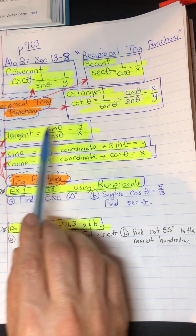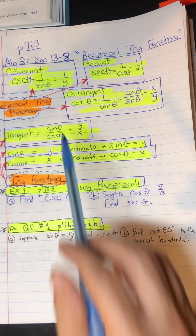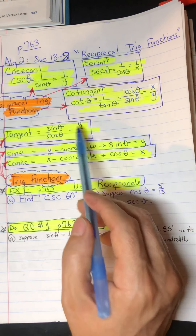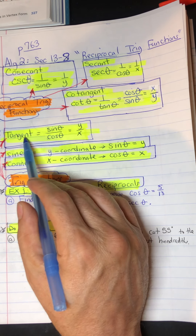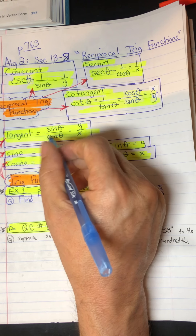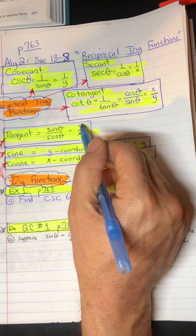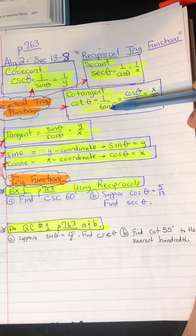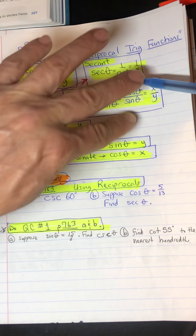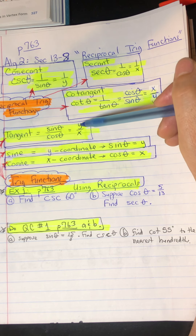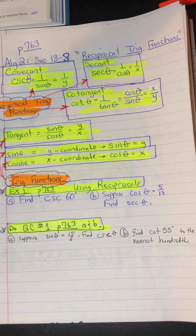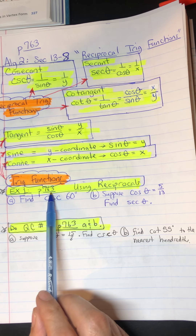Cotangent is the reciprocal of tangent. Tangent equals sine divided by cosine, which is the y-coordinate divided by the x-coordinate of any point on the unit circle. To find the tangent function, you find sine of theta divided by cosine of the same angle — that's y over x. Since tangent is y over x, cotangent is its reciprocal: cotangent equals 1 over tangent, which is cosine over sine, or x over y. These are the reciprocal trig functions — find sine, cosine, and tangent first, then take the reciprocal to get cosecant, secant, and cotangent.